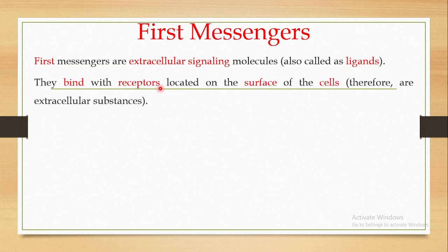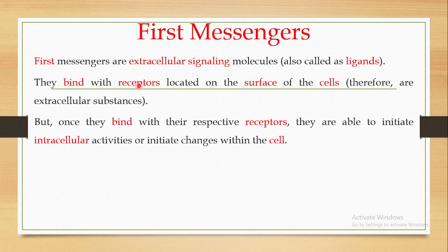What these first messengers do is bind to their respective receptors, which are located on the surface of the cells. Because these extracellular signals bind to receptors on the cell surface, they are extracellular substances — meaning they are not able to cross the cell membrane. They convey their message from the extracellular to the intracellular environment with the help of these receptors.